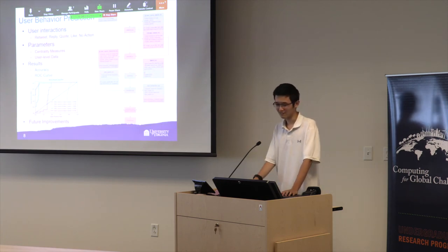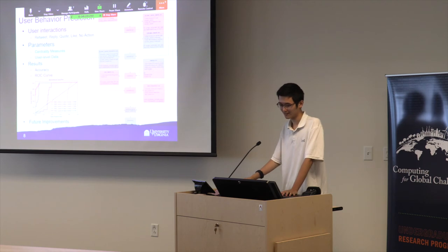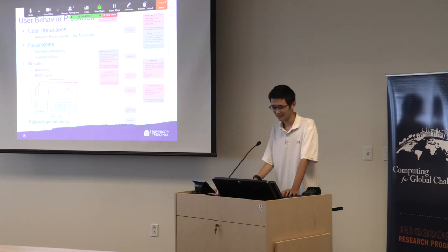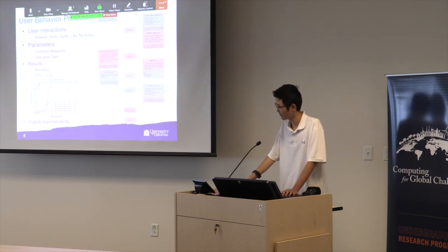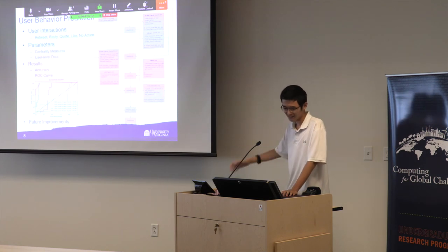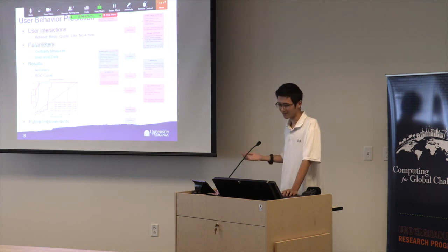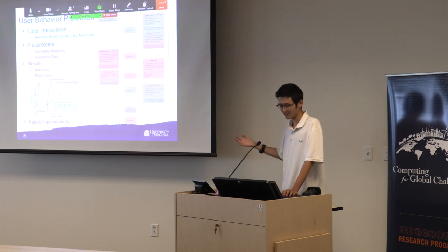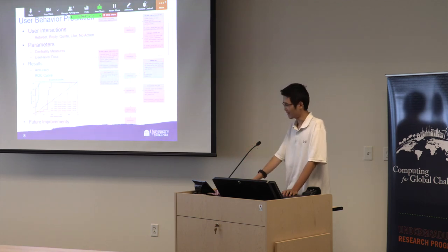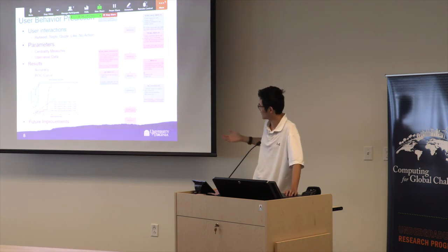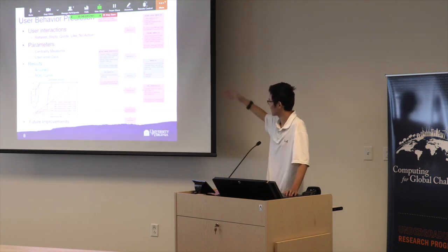For the results, the accuracy of the multi-class classification model is around 57%. The model produces a probability measure for each of the five possible actions a user may take when they see a tweet. You can see the ROC curve for that. My model is currently better at predicting some user behaviors — it is more likely to correctly predict whether a user will like or retweet something.